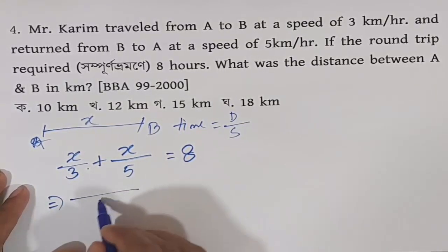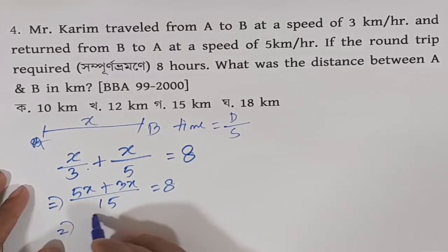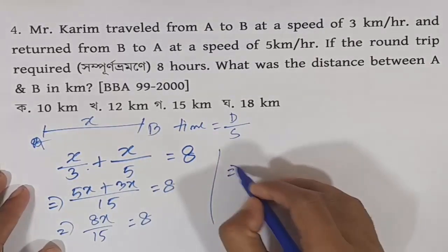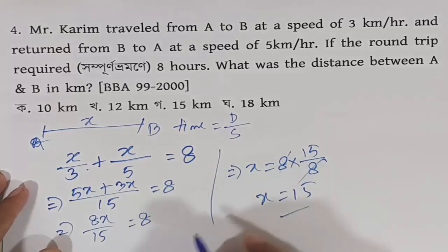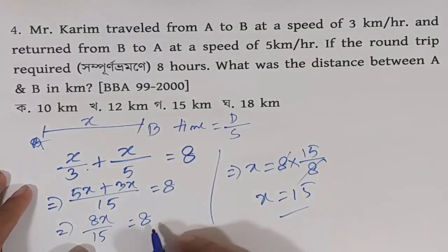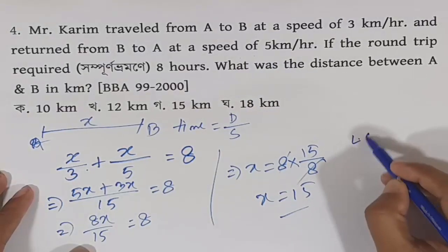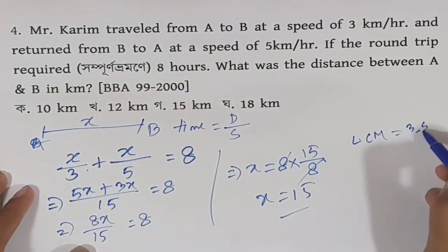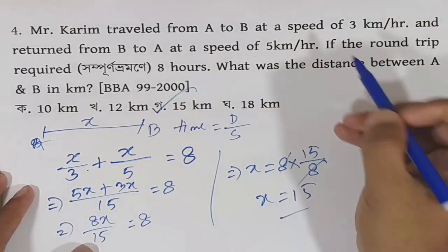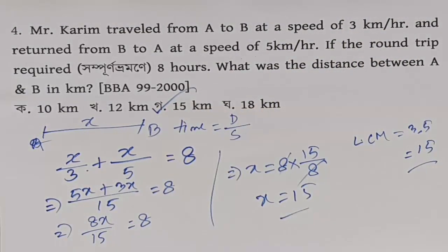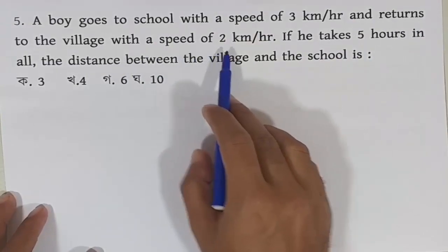So this is the total of 8 hours. Setting up the equation: x divided by 3 plus x divided by 5 equals 8. Solving this, we get the value. The total comes out to be related to 15 hours worth of calculation — the LCD is 15. Working through the arithmetic gives us the distance between A and B.